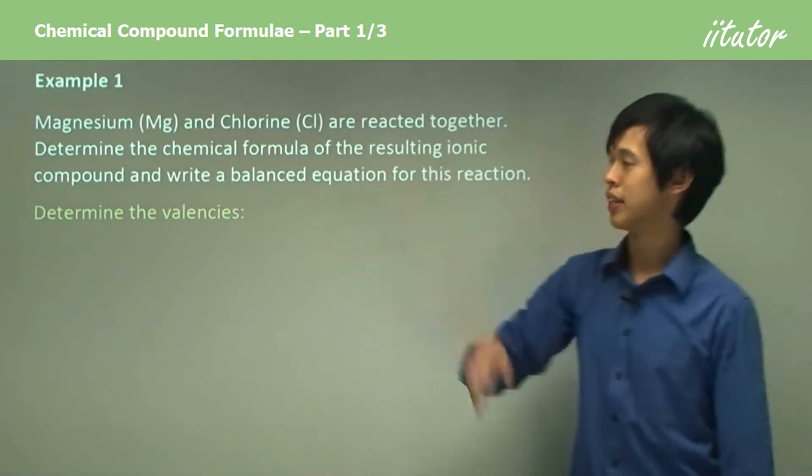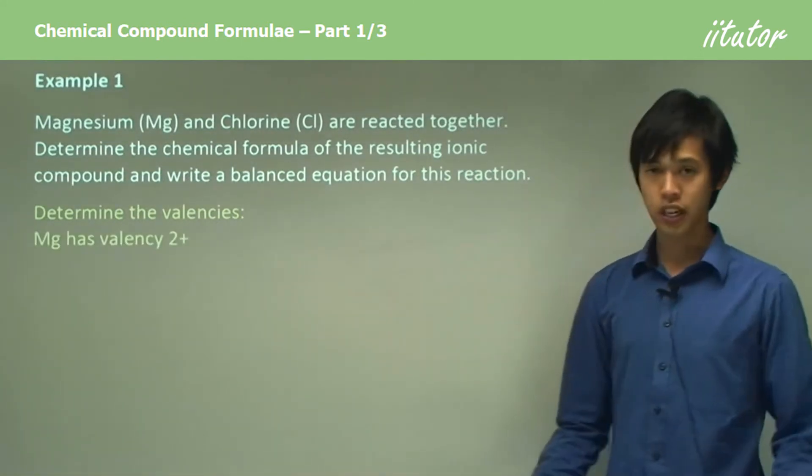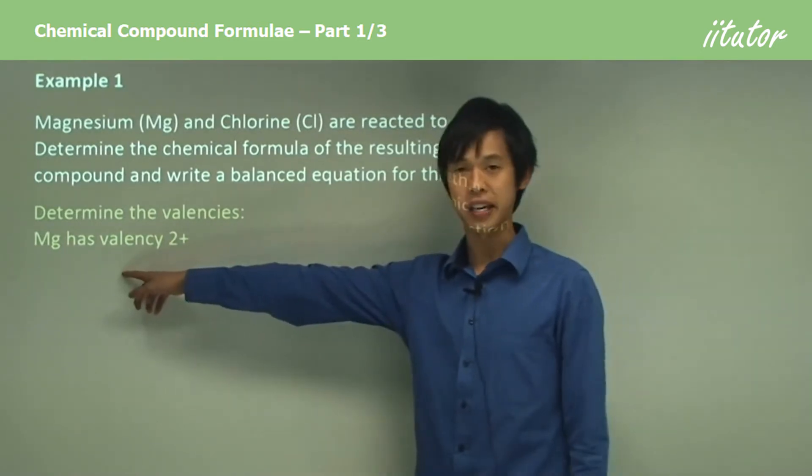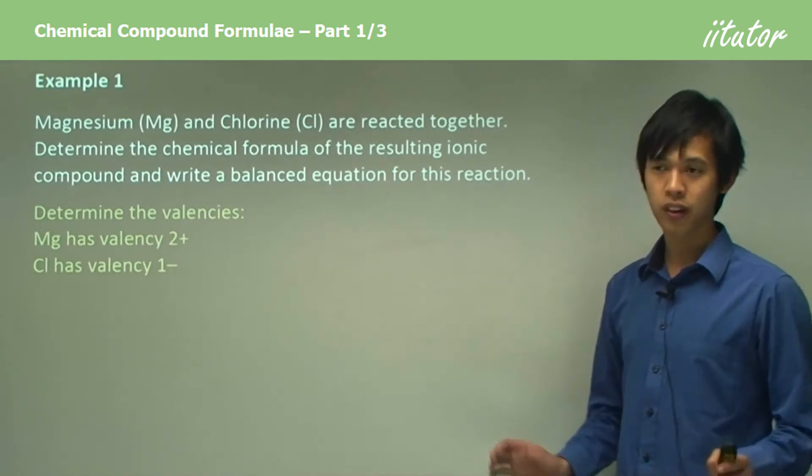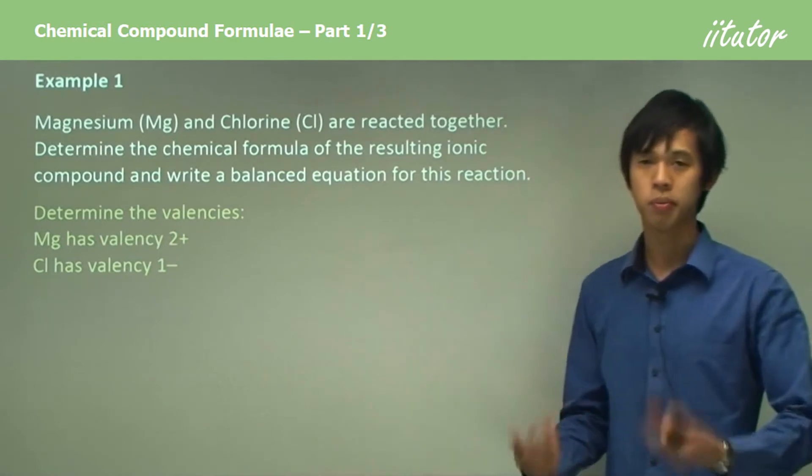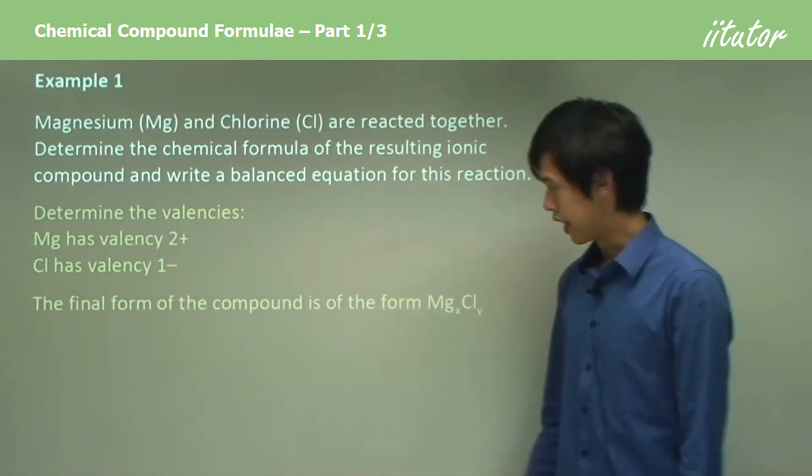We'll determine the valencies first. If you look up the periodic table, you'll see in group two magnesium is there, so you know magnesium has a valency of plus two. If you're looking for chlorine, it's in group seven, so you know that chlorine has a valency of negative one. We should remember this from all our study of the periodic table so far.